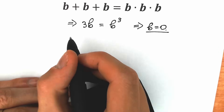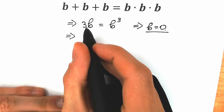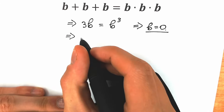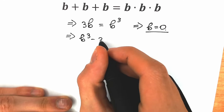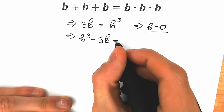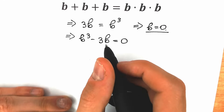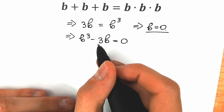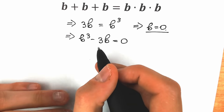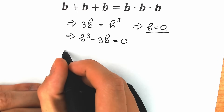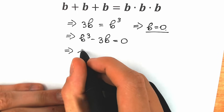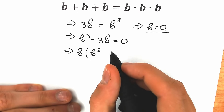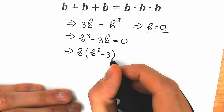This is our cubic equation: b cubed equals 3b. Let's bring 3b to the left side. As a result, we have b cubed minus 3b equals zero. This is not a quadratic equation — it's a cubic equation, but with one really interesting moment. We can easily factor out b. When we factor out b, we get b times (b squared minus 3) equals zero.